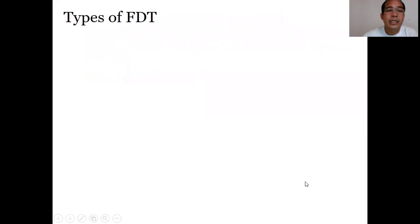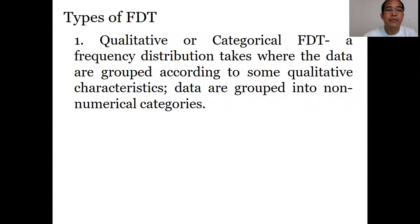There are different types of frequency distribution tables. For example, the first type is known as Qualitative or Categorical FDT. It is a frequency distribution table where the data are grouped according to some qualitative characteristics.